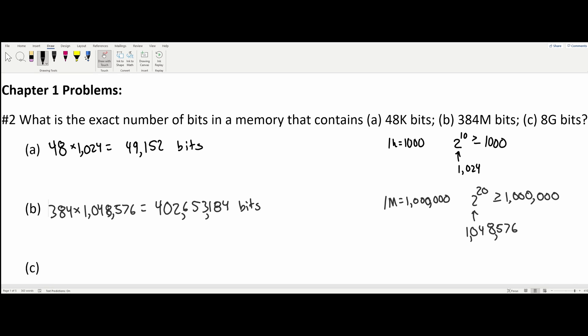For the last one, we have 8G bits. So we're going to have 8 times, and then we're going to find out what we're multiplying by. 1 gig is basically 1 billion.